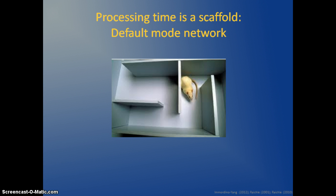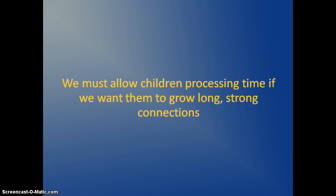When the mouse got to point 4 and stopped to scratch and sniff, points 4, 3, 2, and 1 all became active in the brain. It's in the pause that information gets reflected upon and consolidated. That's why timing to learn is so important. The ability to pause and process is really essential. We must allow children processing time if we want them to grow long, strong connections.